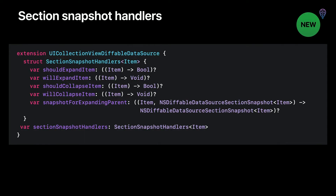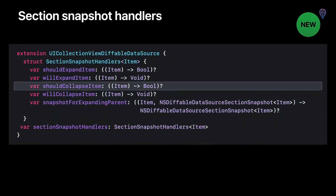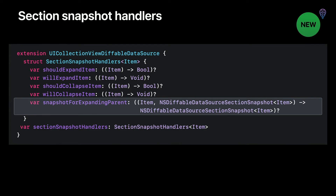Diffable data source has a new property called sectionSnapshotHandlers. This new type is a struct generic over item and contains five optional closures. To handle the requirement that a particular parent never collapses, you can provide a shouldCollapseItem handler that returns false for that parent. We also provide support for lazy loading of expensive content with the snapshotForExpandingParent API. This is useful to minimize the amount of content loaded in the initial section snapshot when fetching content is expensive, allowing you to load content as needed based on the current child snapshot state.